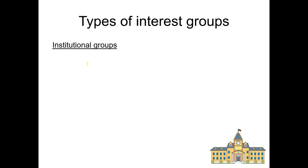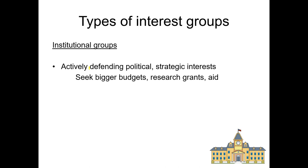The second type of interest group is what we call institutional groups. These are governments and nonprofits actively defending political and strategic interests. They are not profit-seeking groups; otherwise they would be economic groups. Government agencies and state and local governments are looking to get bigger budgets, research grants, and aid packages from the government. We'll talk about an example where the Navy has its own legislative representative group that lobbies Congress to make sure the Navy continues to get funding.